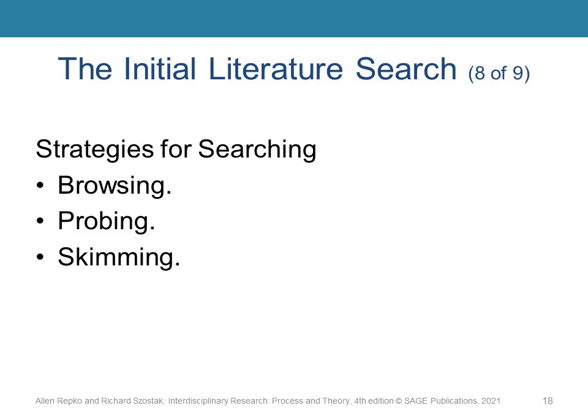Skimming involves flipping through the pages of a source to find relevant information. We might skim the abstracts of a journal article, or read the introductory paragraphs of a book, or review the table of contents in a textbook, or read the bolded headings in a chapter. Eventually, we will read the full publication if we decide it is important to our research. Skimming should take a fraction of the time it would take to actually read a source in its entirety.